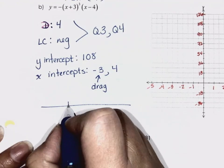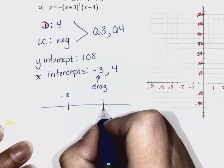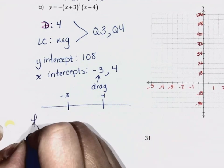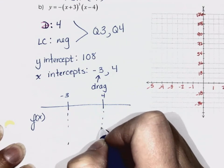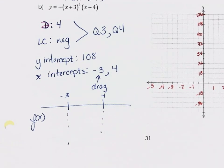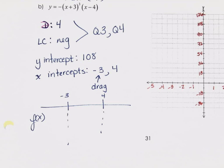Let's do sign analysis first. I have negative 3 and positive 4, and I'm looking for what the f(x) values are doing in between those points. For values less than negative 3, it should be negative because our graph ends in quadrant 3. Putting negative 4 in: negative plus 3 is... we need a value less than negative 3, like negative 4.